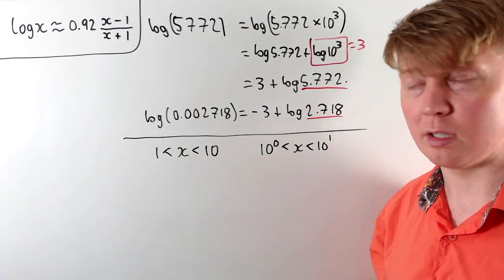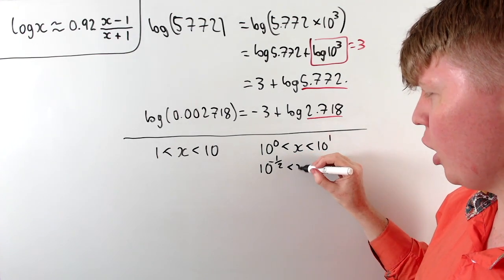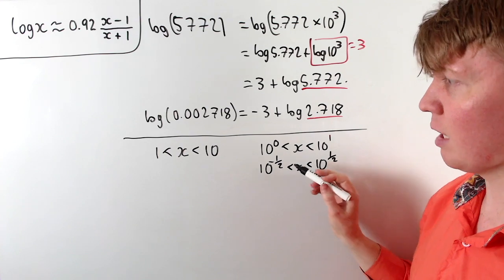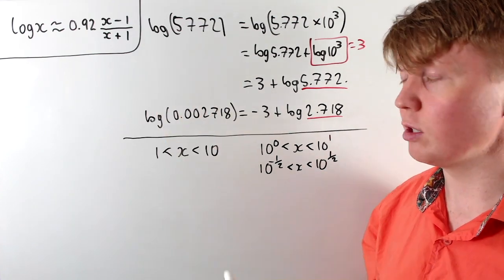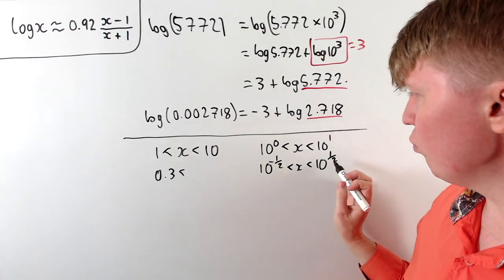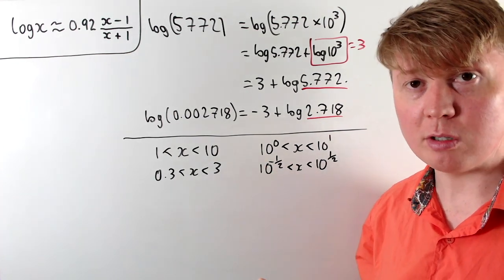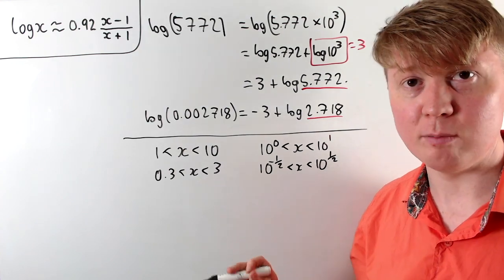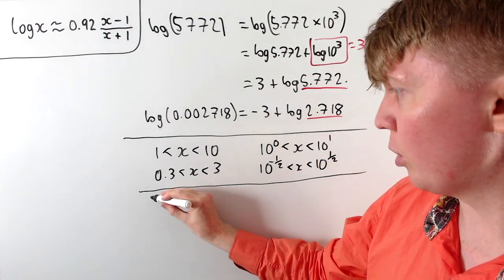There's nothing stopping us, instead of using scientific notation with a number between 1 and 10, from changing this to go between 10 to the negative half and 10 to the positive half — that is, between 1 over root 10 and root 10. This way all of our x's would be closer to 1, taking advantage of the fact that the approximation is good for x near 1. Since 1 over root 10 is approximately 0.3 and root 10 is approximately 3, we'll impose that our number must be between 0.3 and 3.